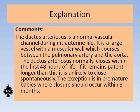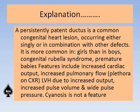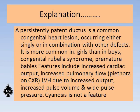There were pharmacological agents used earlier, like indomethacin, which is a prostaglandin inhibitor. A persistently open ductus is a common congenital heart lesion, occurring either singly or in combination with other defects. It is more common in girls than boys. Congenital rubella syndrome and premature babies are associated conditions. In CRS (congenital rubella syndrome), the triad is PDA plus deafness and cataract — it is one of the preventable heart diseases by vaccination. Features include increased cardiac output, increased pulmonary flow (pulmonary plethora on chest X-ray), and left ventricular hypertrophy. Increased pulse volume and wide pulse pressure are present; cyanosis is not a feature.